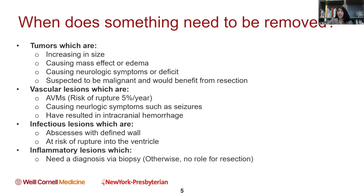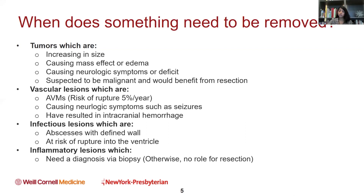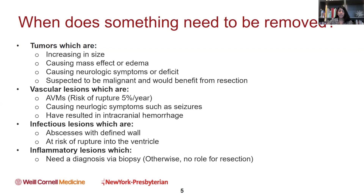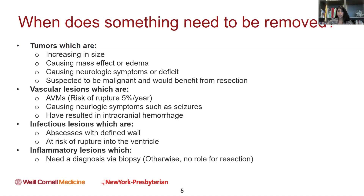Inflammatory lesions like MS are not neurosurgical lesions — they don't need to be removed. They can sometimes look like tumors, but in general they're not treated surgically; they're treated with medications and immunomodulators. The only time surgeons get involved is if we're not sure what something is and we need to do a biopsy. Otherwise, there's typically not a role for resection for most inflammatory lesions.